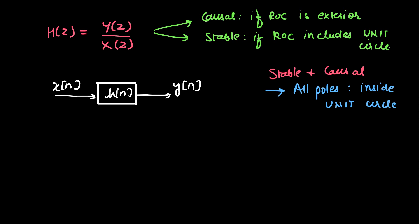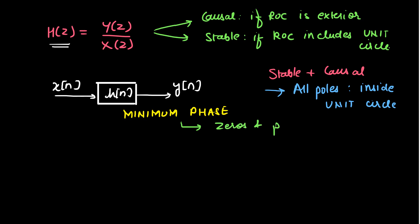Now let this system H(z) be a minimum phase system. If H(z) is a minimum phase system, this means that both the zeros and poles are inside the unit circle.